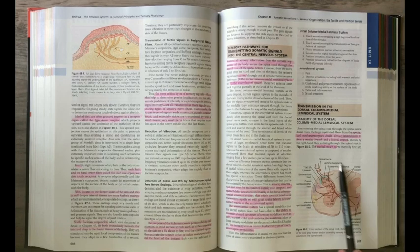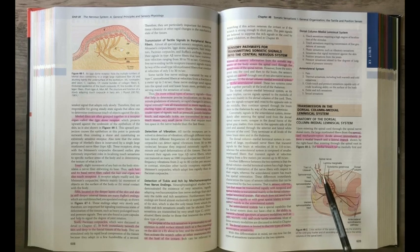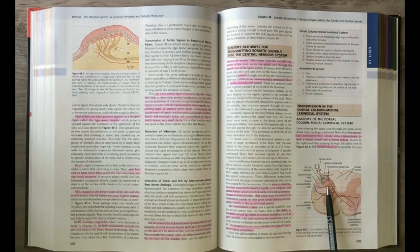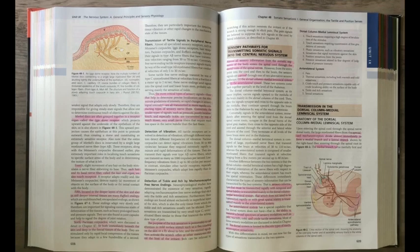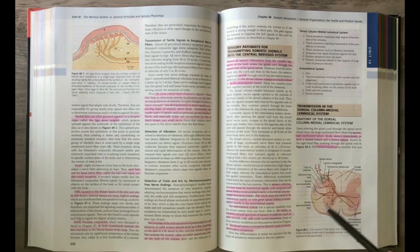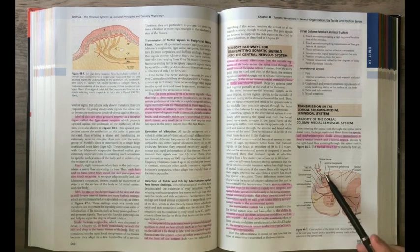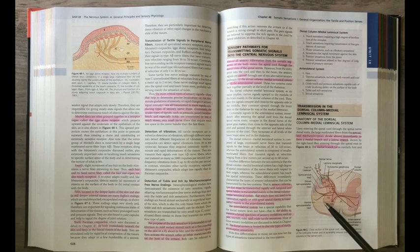The dorsal column medial lemniscal system sends it straight to the brain, sends the fast signals, and they're very good at localization of the sensation. Very fast-tracked, straight to the brain, and is well localized. Now without having to go into too much detail about the cross-section of the spinal nerve, we have the white matter on the outside and gray matter on the inside.